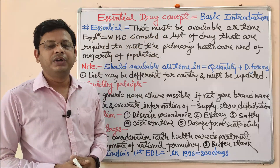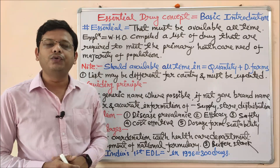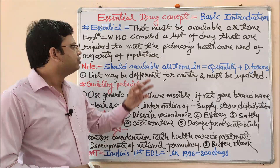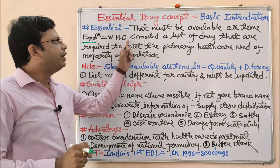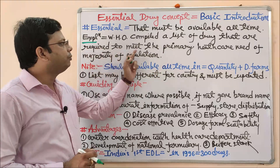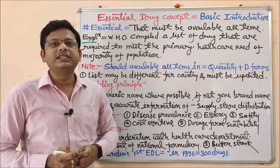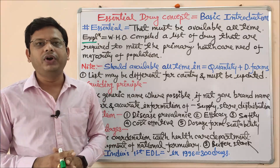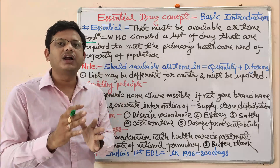The essential drug concept was given by the WHO to maintain uniformity of drug collection so that its supply may be adequate at all times. As per the WHO definition, the WHO compiled a list of drugs that are required to meet the primary healthcare needs of the majority of the population. For example, in any given state, there are different types of population — some living in cities and some in villages — with variable economic backgrounds.